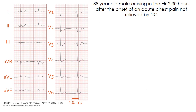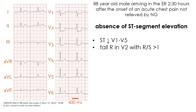This is an example of a complete occlusion of an epicardial coronary artery not resulting in ST-segment elevation. The electrocardiogram is from an 88-year-old male arriving in the emergency room two and a half hours after the onset of acute chest pain not relieved by nitroglycerin. As you can see, there is no ST-segment elevation, but an ST-segment depression from V1 to V5.